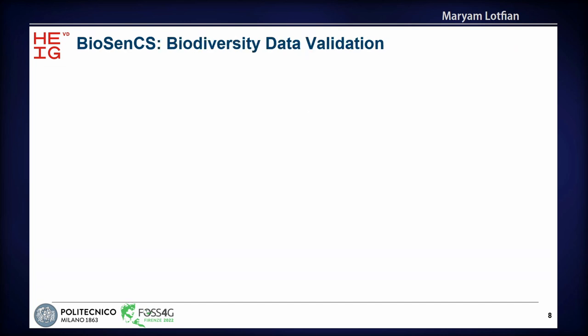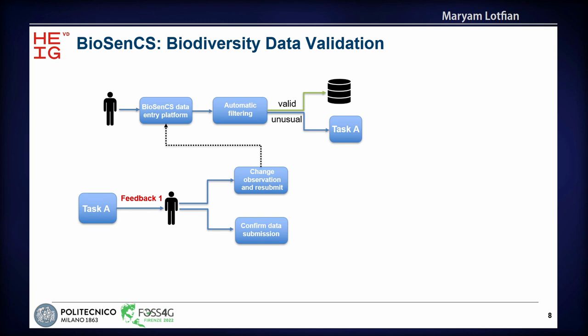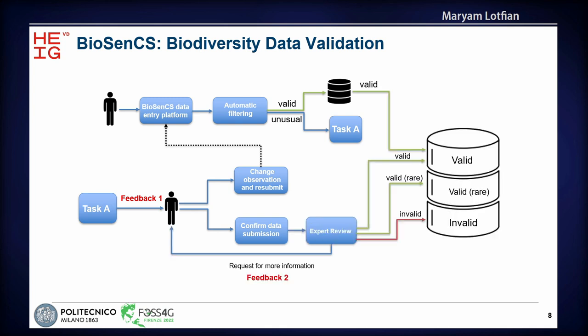The approach of this real-time data filtering and feedback generation works as follows. When a participant makes a contribution to the BioSense ES application, the observation passes through automatic filtering. If it passes successfully, it is classified as a valid observation. Otherwise, it is flagged as an unusual observation. In that case, the participant receives feedback with information on why the observation was flagged, and they can decide either to modify and resubmit or confirm the observation as is. If confirmed, an expert performs the final validation.